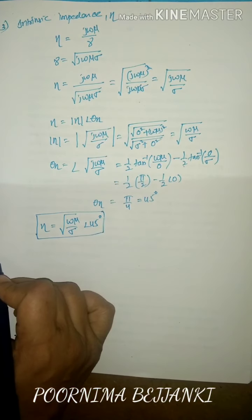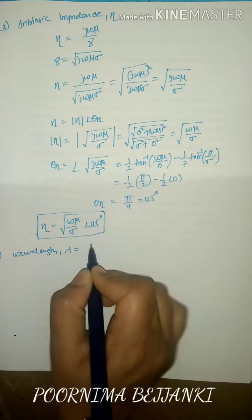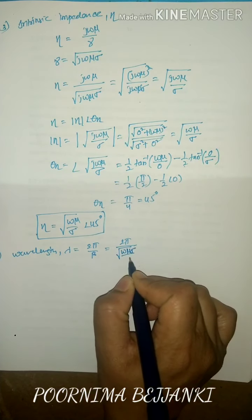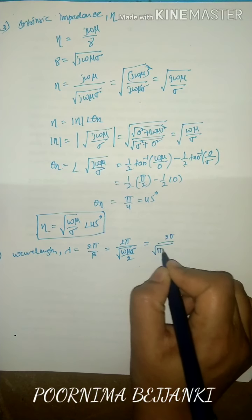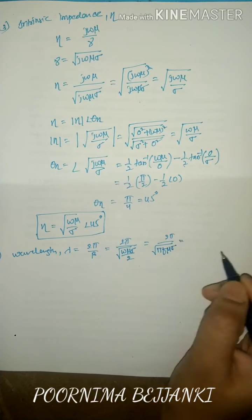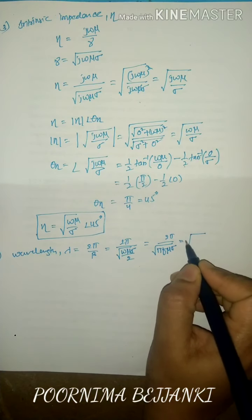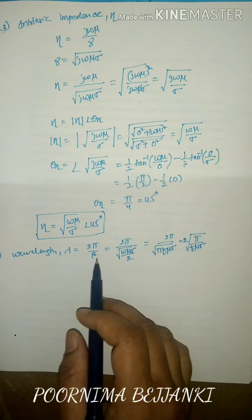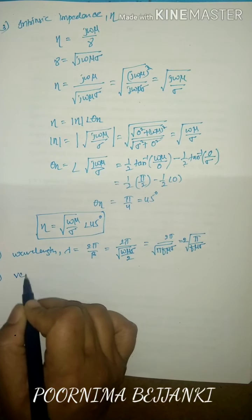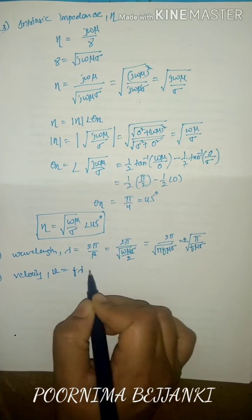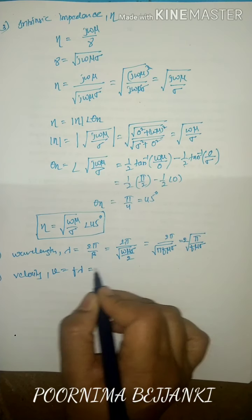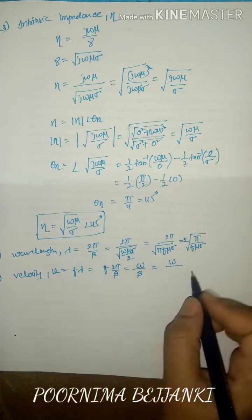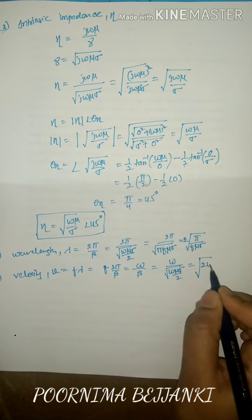Wavelength lambda equals 2 pi over beta, where beta equals root of omega mu sigma over 2, giving lambda equals 2 pi divided by root of pi f mu sigma, simplified as root of 2 pi over f mu sigma. Velocity u equals omega over beta. Substituting beta: u equals root of 2 omega over mu sigma. The velocity is a function of frequency, so different frequencies travel with different velocities inside a conductor — we call this type of medium a dispersive medium.